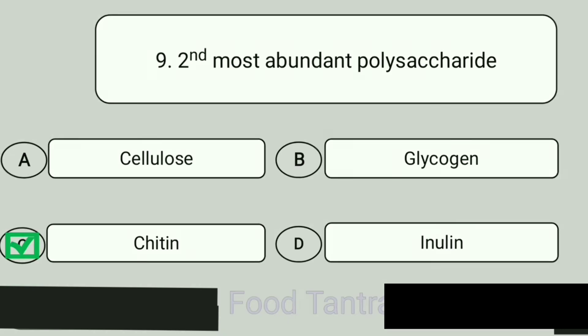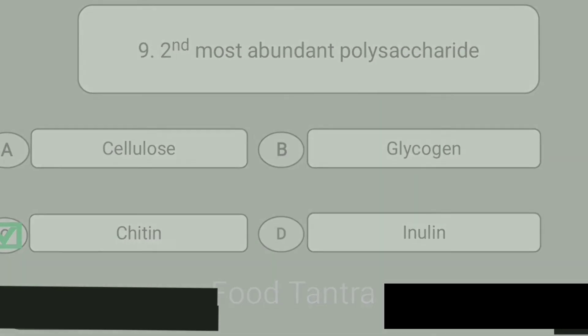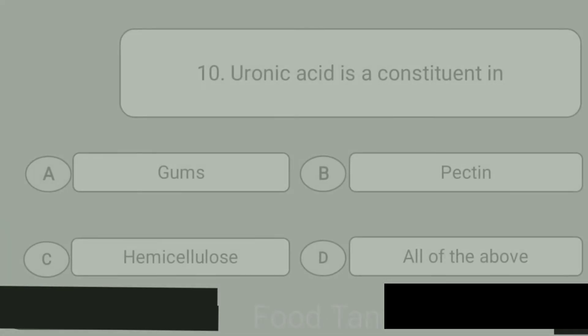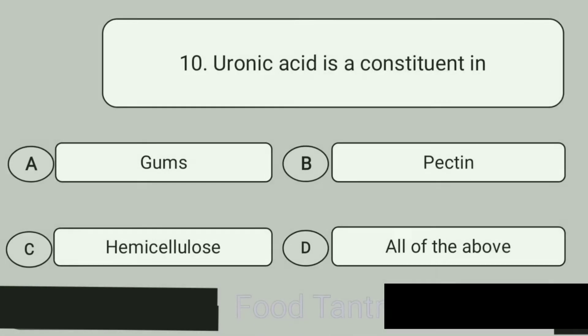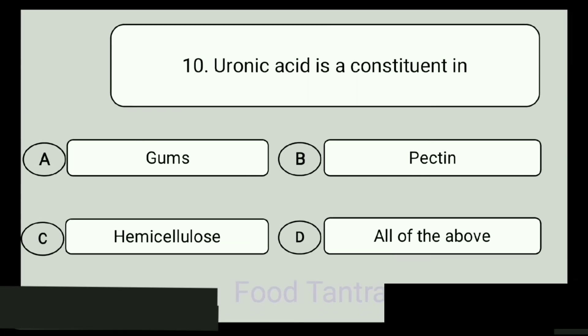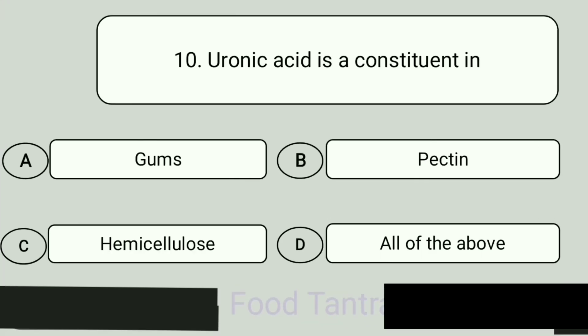Question 10. Uronic acid is a constituent in. A: Gums. B: Pectin. C: Hemicellulose. D: All of the above. Answer is All of the above.